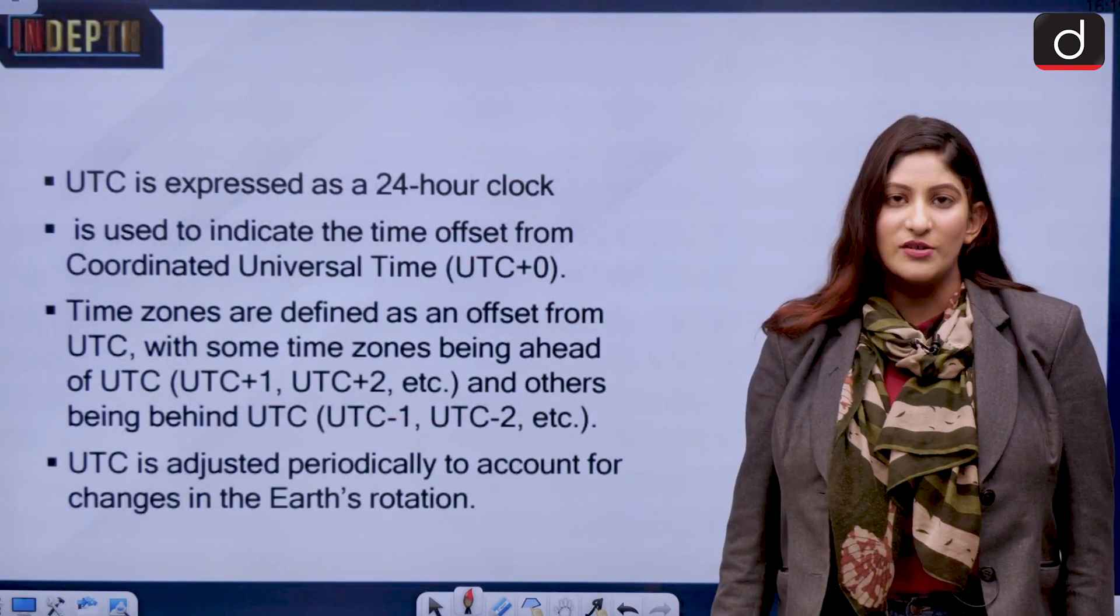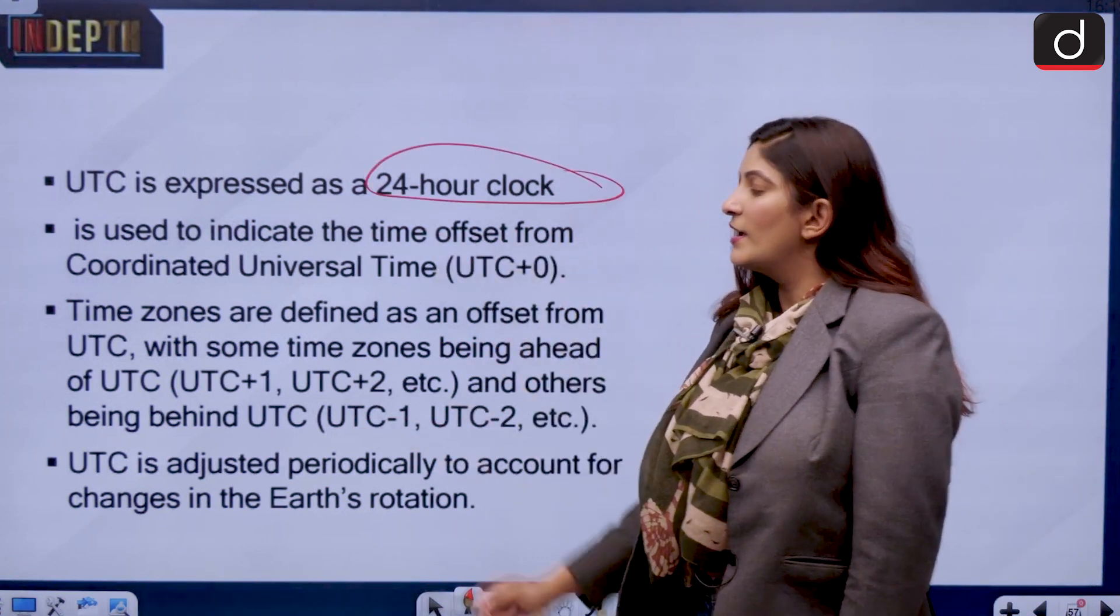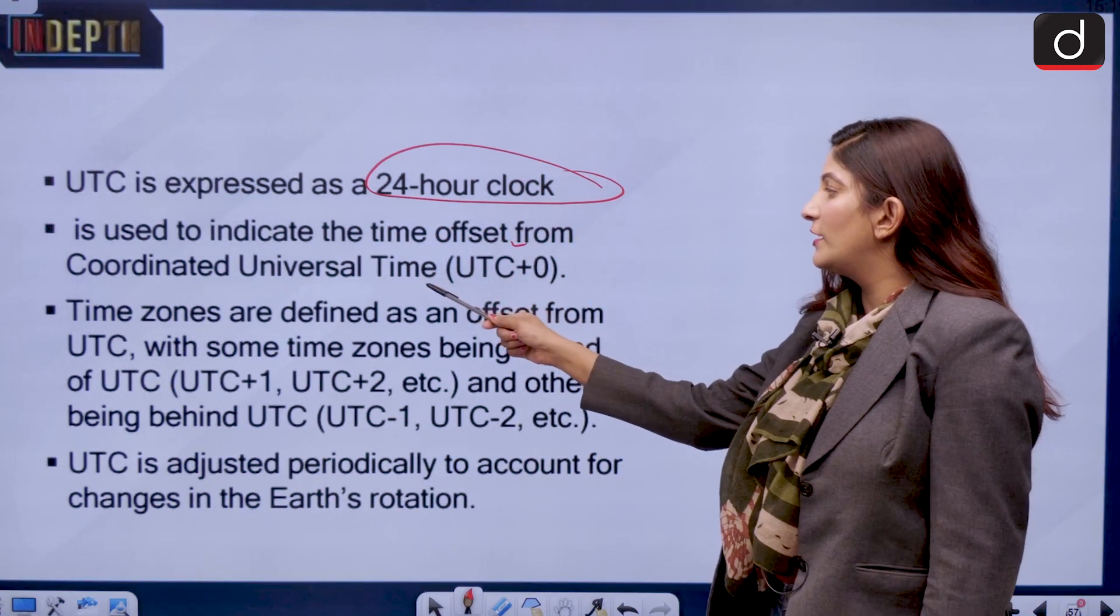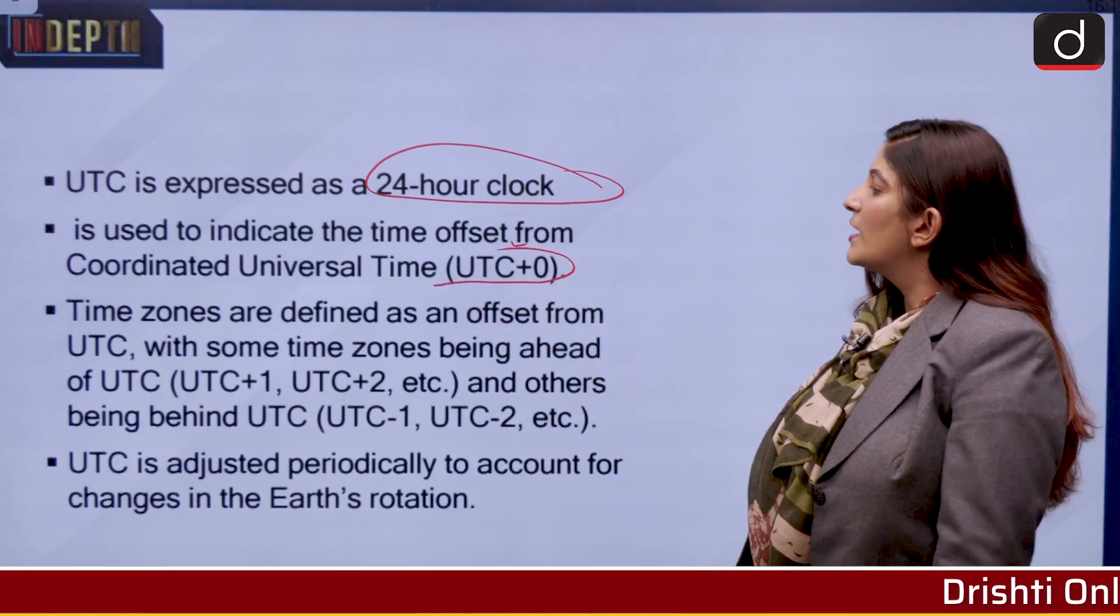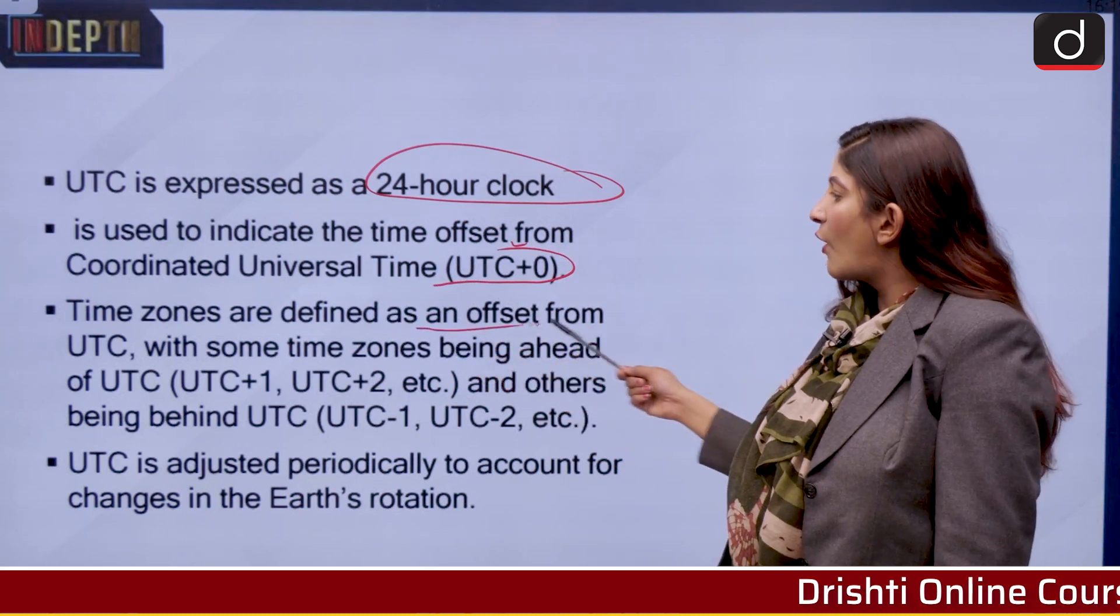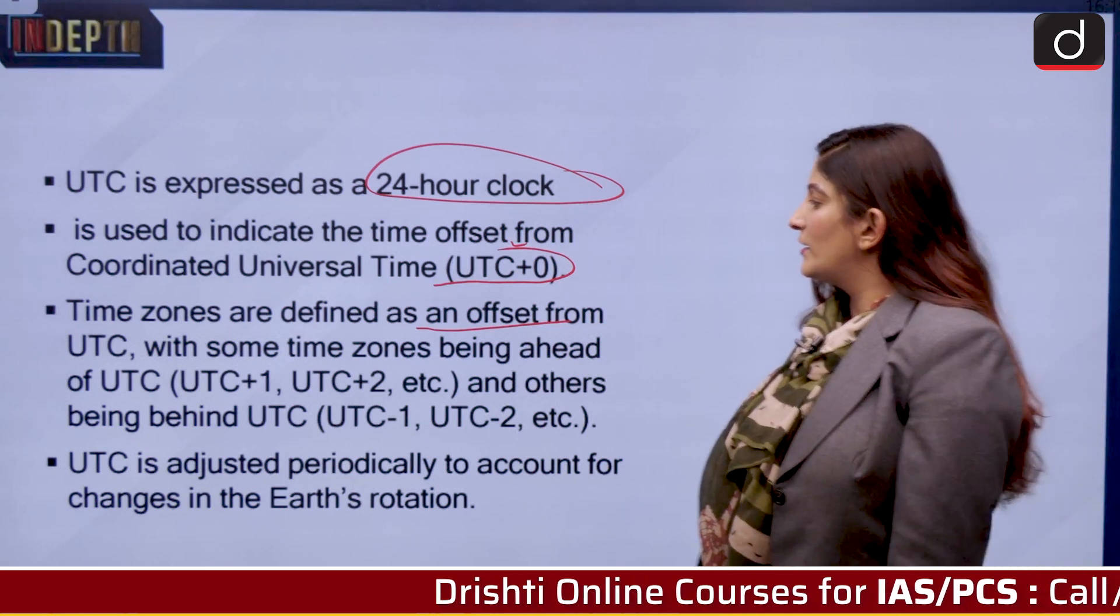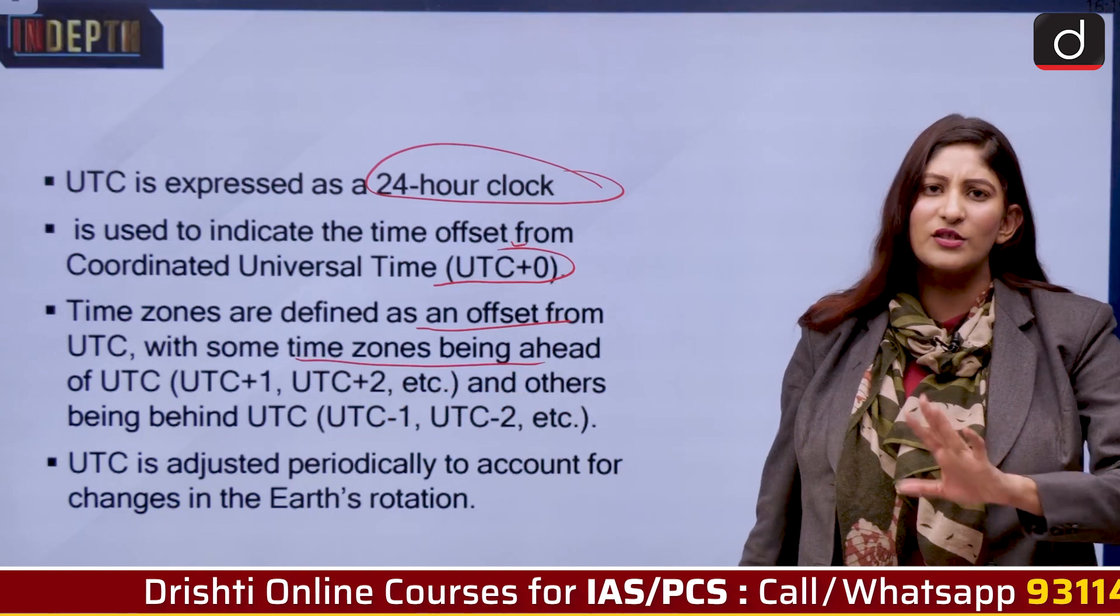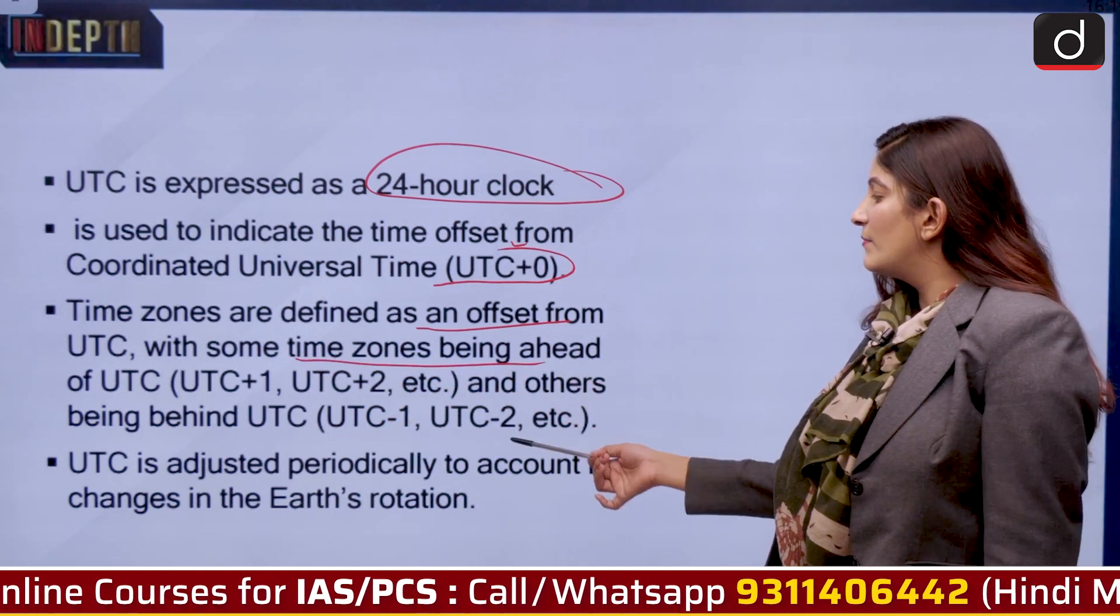How is it measured or expressed? It is measured as a 24 hour clock and this is used to indicate the time offset from coordinated universal time plus whatever the number is. Time zones are defined as an offset from UTC. Some time zones are ahead of UTC, like Greenwich Mean Time, we also know a similar concept for this, and others are behind.